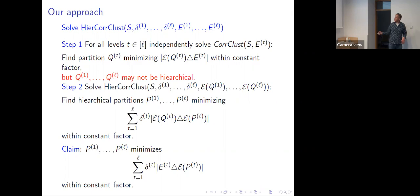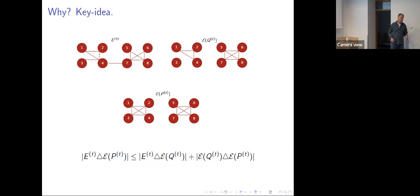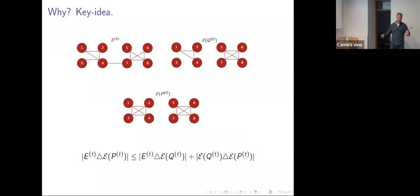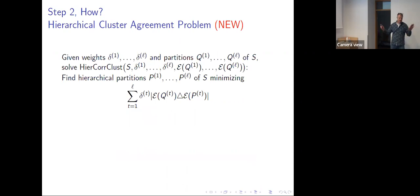Then we use the independent clusterings as input to the hierarchical correlation clustering problem again. Now the inputs for hierarchical correlation clustering at each level are not arbitrary edge sets but a bunch of cliques. If we can do this within a constant factor, and we already knew how to do the first step within a constant factor, then everything is within a constant factor. Why? That's just triangle inequality — going to the non-hierarchical solution and back down is only three times as far as going directly.